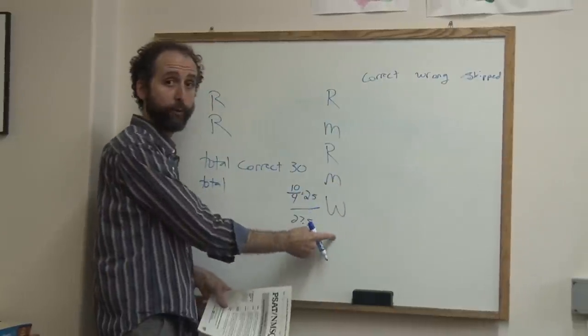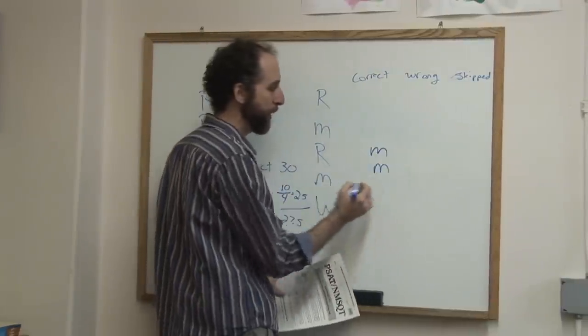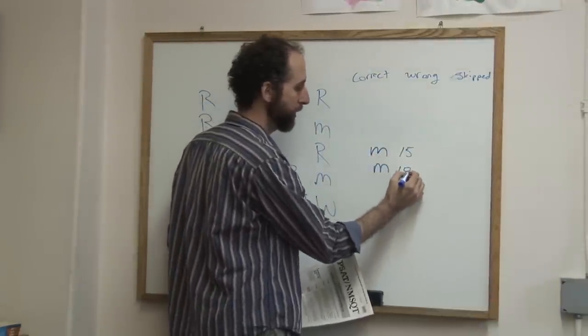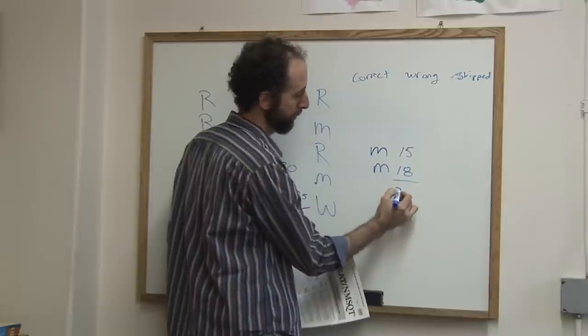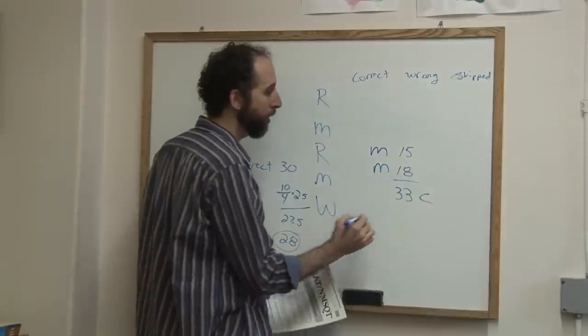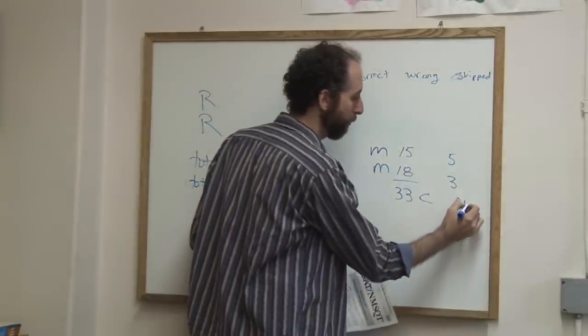You can do the same for the math and for the writing. For the math, the two math sections, you're going to add up how many you got correct. Let's say you got 15 and 18, that would be 33 correct. Then you'll find out how many you got wrong. Let's say it was 5 and 3, so you got 8 wrong.